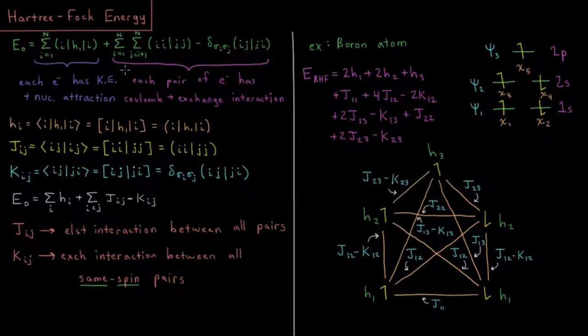And the second term is how each pair of electrons has some Coulomb and exchange interaction. The Coulomb interaction being the classical electrostatic repulsion between these two charge densities and these two spin orbitals. And the exchange interaction coming only if the spins of those two spin orbitals are the same, either both alpha or both beta.